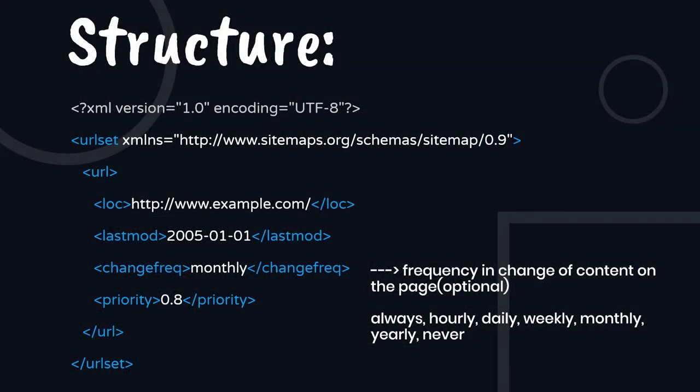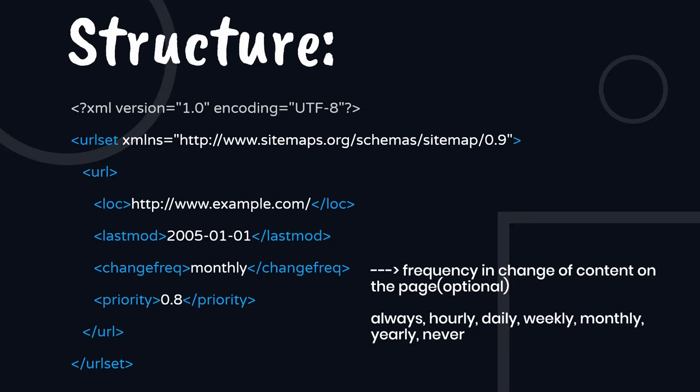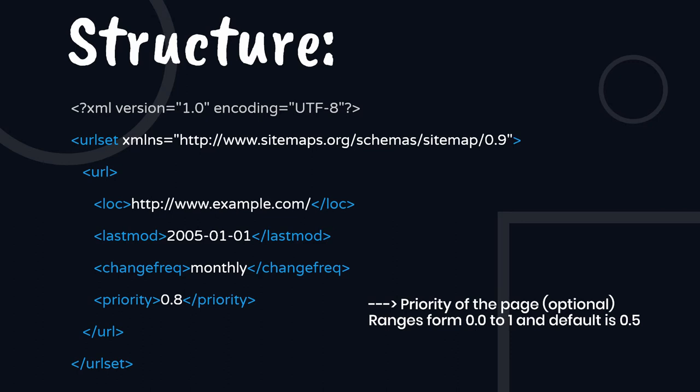The second parameter is changefreq, which denotes the frequency of content change on the page. It's optional but recommended. The options are: always, hourly, daily, weekly, monthly, yearly, or never — meaning you are not changing it at all. The last parameter is priority, which denotes how important that page is for the crawler to parse first. If you don't define any priority, the crawler assumes a default of 0.5, and you can manually type a value from 0.0 to 1.0.